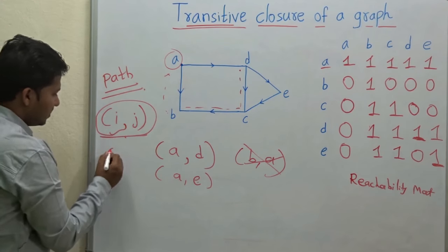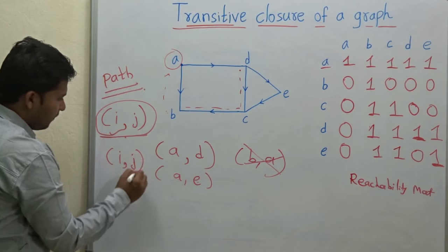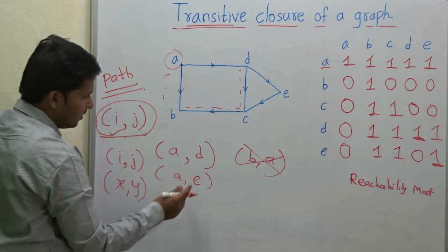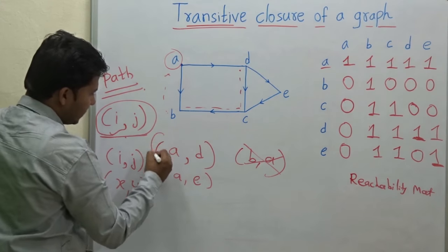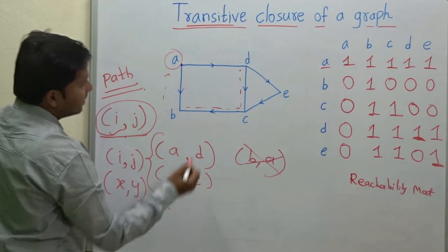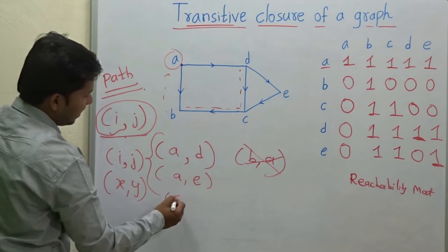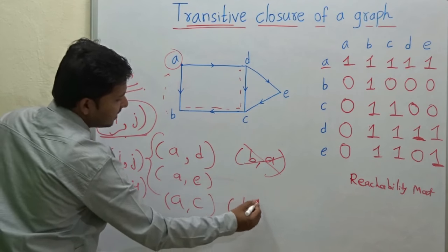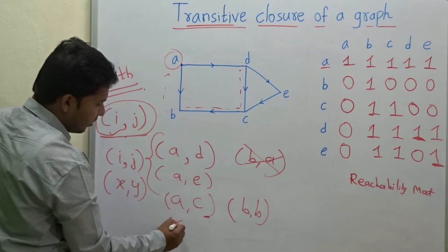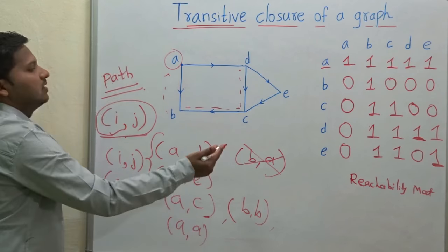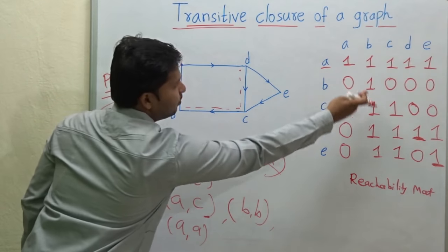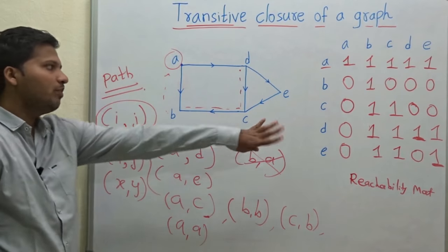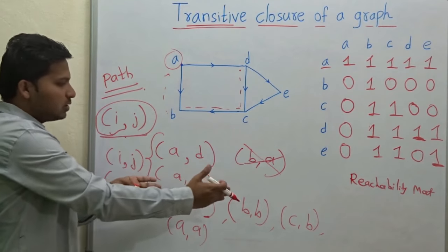A set of such paths — for example, I, J, then X, Y. Here you can see the set: A, D; A, E. Then we can add some more like A, C. Then from vertex B, there is only one, that is itself. For vertex A also, you can add itself. Then from vertex C, you can reach to B, so you can add C, B. In this way, when you make a set of all these paths, that is called as the transitive closure of that graph.